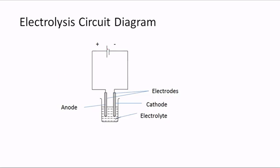This is a simple diagram used to demonstrate electrolysis. We have a cell — the long line is the positive terminal and the short line is the negative terminal. These are the two electrodes. The electrode connected to the positive terminal is called the anode, and the one connected to the negative terminal is called the cathode. Here we have the electrolyte in its container.